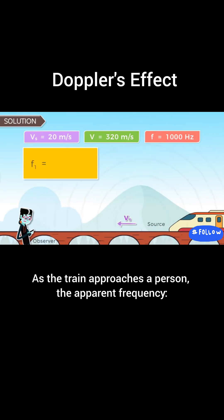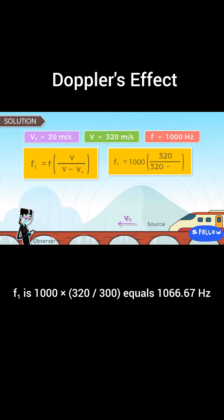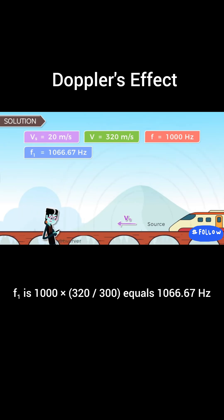As the train approaches a person, the apparent frequency f1 is 1,000 times 320/300, equals 1,066.67 hertz.